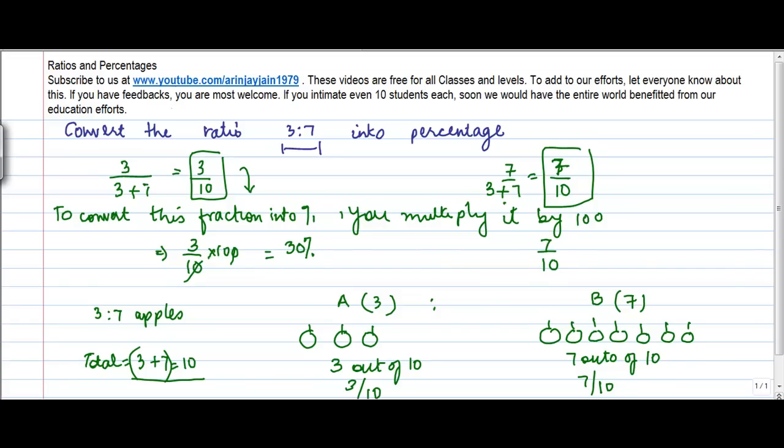Similarly, you can write 7 upon 10 as 7 upon 10 into 100 or 70%.